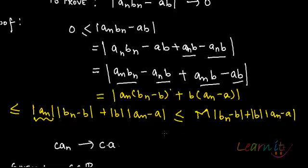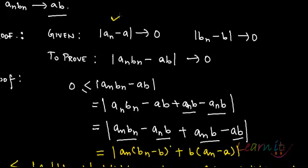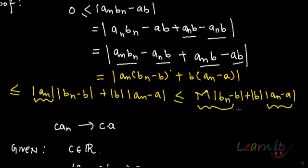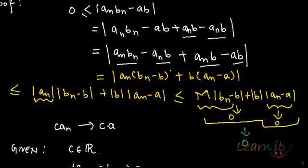What we have now is that we know something about a_n and b_n. Since a_n converges towards a, |a_n - a| tends towards 0, and by convergence of b_n, |b_n - b| tends towards 0. Applying that here, this term tends to 0 and this term tends to 0, which means the complete expression M·|b_n - b| + |b|·|a_n - a| tends to 0.